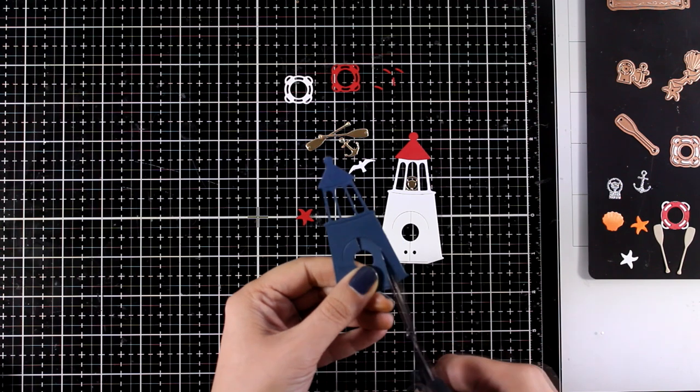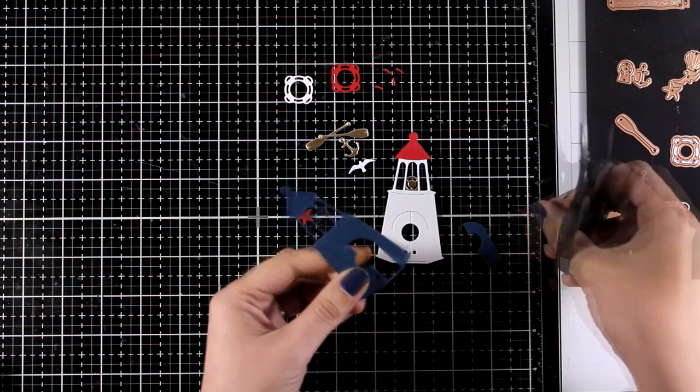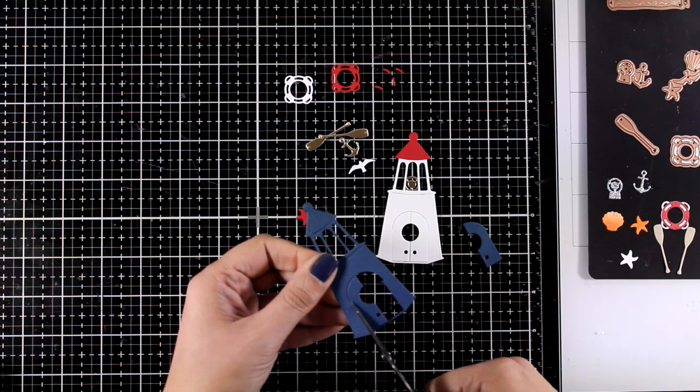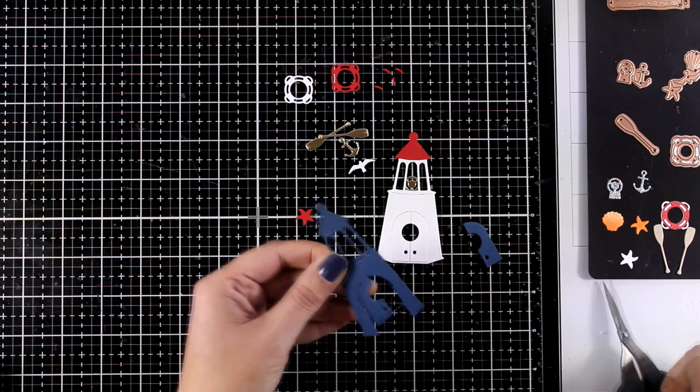Another idea is to use a string and maybe tie a knot and somehow incorporate that on your design or even add burlap which is something that I'm going to do today to add some extra texture.